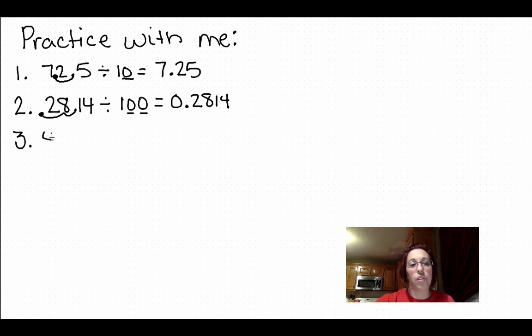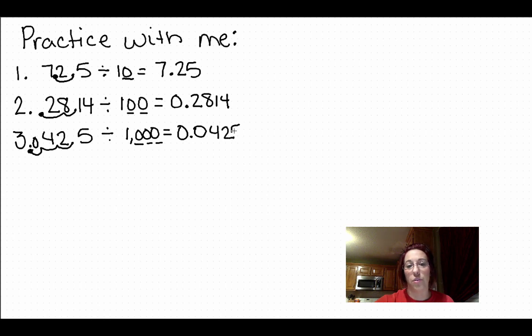Third practice problem, 42.5, we're going to divide that by 1000. So count our zeros. One, two, three. Move our decimal. One, two, three. Fill the hole with a zero. 0.0425.